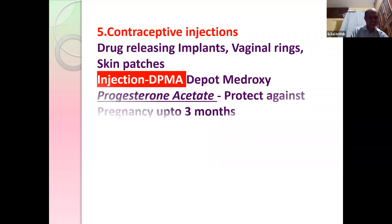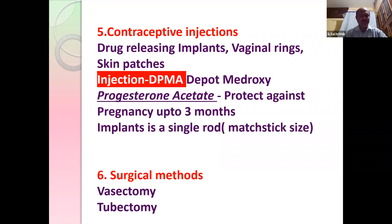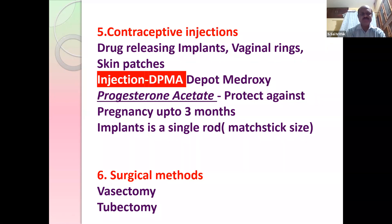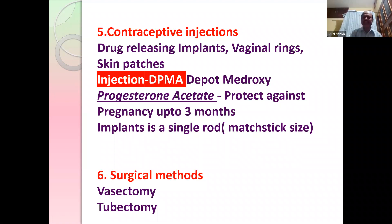Contraceptive injections, drug-releasing implants, vaginal rings, and skin patches are also birth control measures. The injection DMPA (Depot Medroxyprogesterone Acetate) is used as a contraceptive injection that protects against pregnancy for up to three months. Implants are single rod-like structures implanted under the skin, also useful as birth control devices.